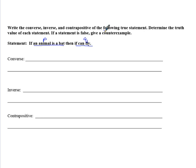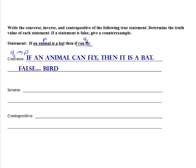So the converse, converse is when we switch. Q implies P. So what would that look like? If an animal can fly, then it is a bat. Is that a true statement? No, it is not. So just because an animal can fly doesn't necessarily mean it's a bat. It could be a bird.